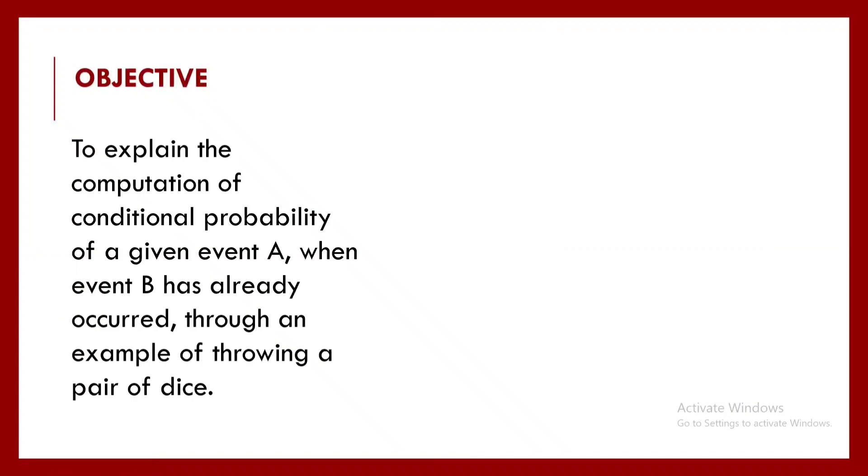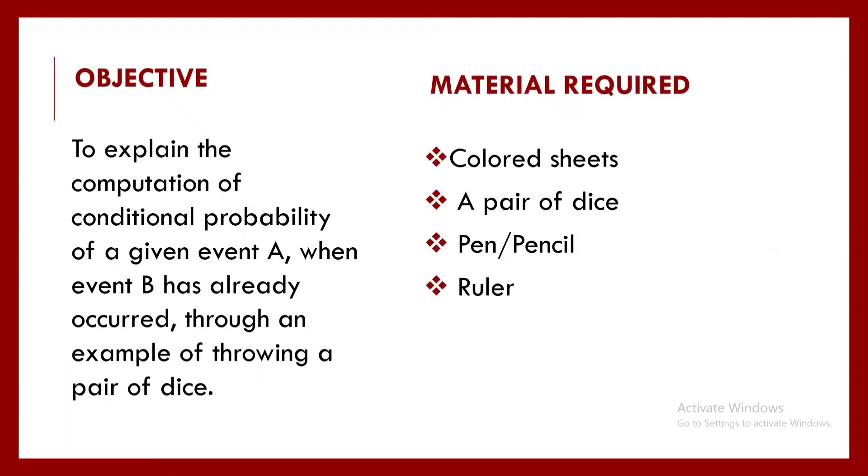Let us see the objective. It is to explain the computation of conditional probability of a given event A when an event B has already occurred through an example of throwing a pair of dice. What all do we need? The material required: colored sheets, a pair of dice, pen or pencil, and a ruler, and of course an editor.